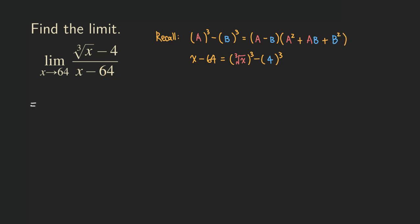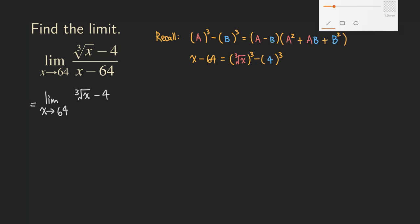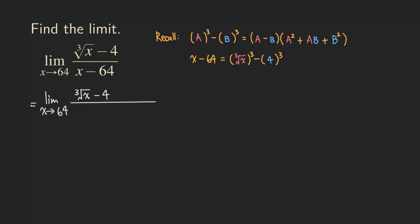So now we go into the limit problem. We have the limit as x approaches 64. The numerator we leave as is — we are going to factor the denominator. The first factor is a binomial A minus B: A is the cube root of x, and B is 4, so we get cube root of x minus 4.